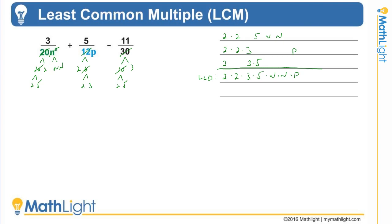2 times 2 is 4, 4 times 5 is 20, 20 times 3 is 60n²p. There's the LCM of the factors of those denominators, which gives us the lowest common denominator. Remember, least common multiple—you're looking for the union of the factors.